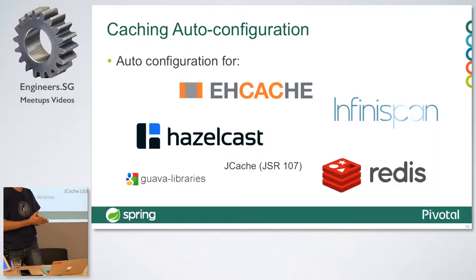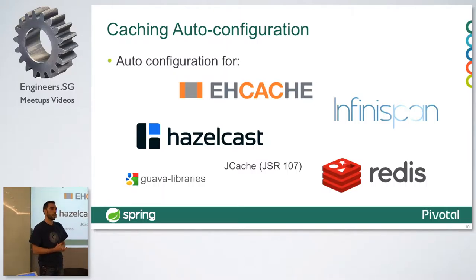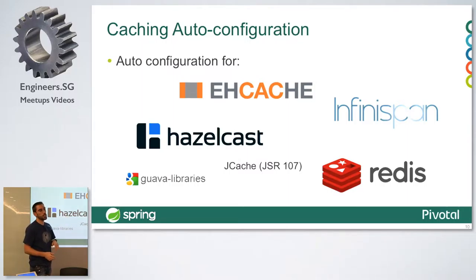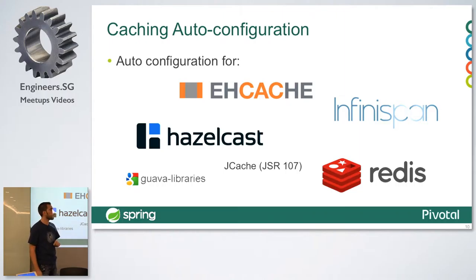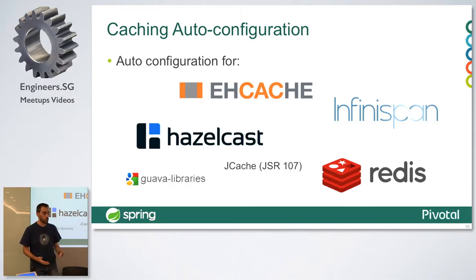The next thing Spring Boot 1.3 provides is auto-configuration for the caching layer. Spring has a caching abstraction so you can use any cache implementation underneath — EHCache, Hazelcast, Redis, JSR-107 implementations, anything. You use annotations in your application and Spring defines a cache manager backed by one of these technologies. In Spring Boot 1.3, you can enable caching with a simple annotation, and just by providing dependencies on the classpath, Spring Boot will auto-configure a cache for you.